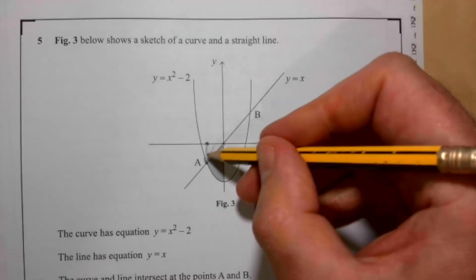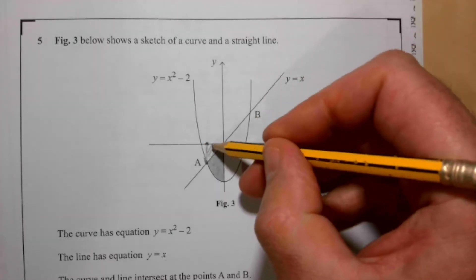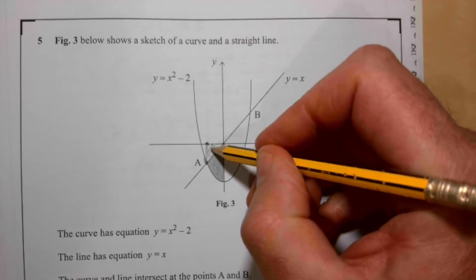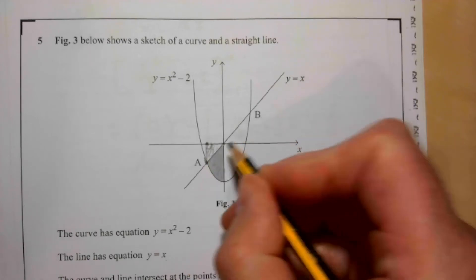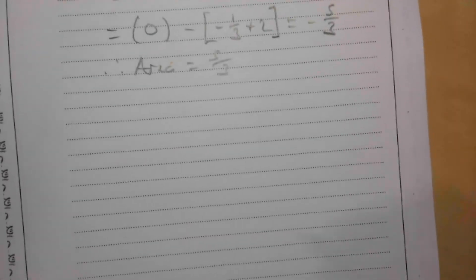What we have just found here is this whole area here. So we need to take away this wee triangle. Nothing fancy, just a wee bit of Euclid maths here. That's 1, and that's 1, and that's a right angle. So let's find our area of our triangle.